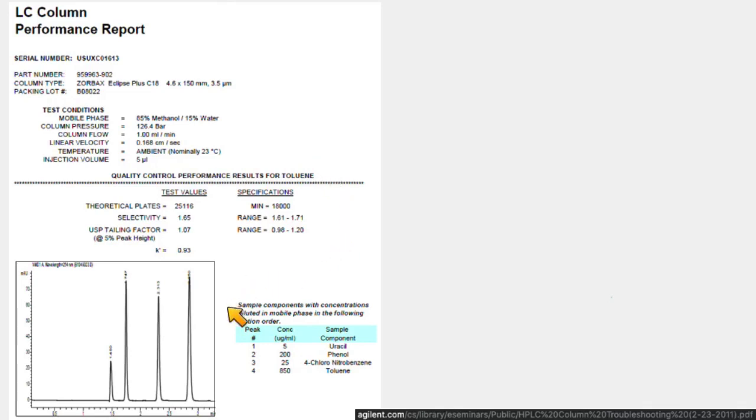They show the chromatogram down here, and here are the components in it. Peak one, the first one, is uracil, then you have phenol, then 4-chloronitrobenzene, then toluene, in order 1, 2, 3, 4. In order to do these calculations, you have to specify which peak you're using, and so they specify that they do these calculations for toluene. Usually they'll use the last peak here, and they calculate theoretical plates, they calculate the selectivity, they calculate a retention factor, although they call it k prime, same thing. We can use this as an example to see how to calculate these things.